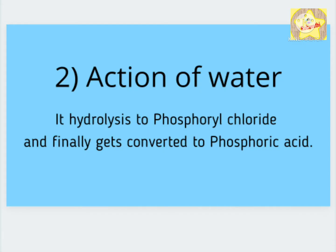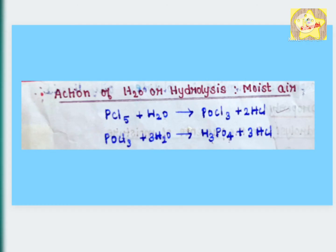The action of water. Phosphorus pentahalide hydrolyses to phosphoryl chloride, and finally gets converted to phosphoric acid.